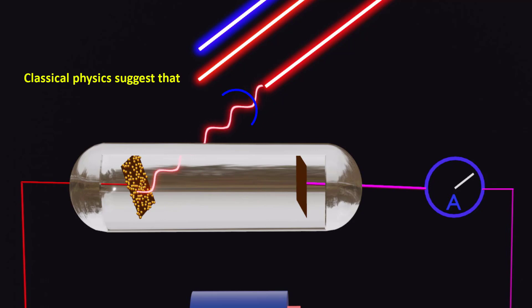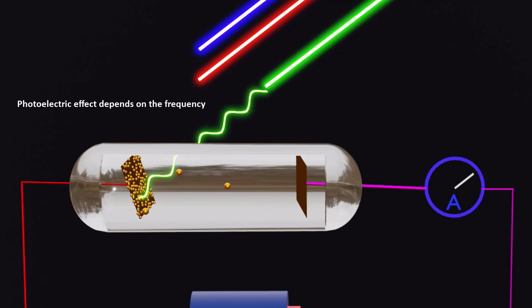If the frequency is below the threshold value, increasing the intensity of light over time may eventually eject electrons. However, in reality, the photoelectric effect depends on the frequency of the incident light.